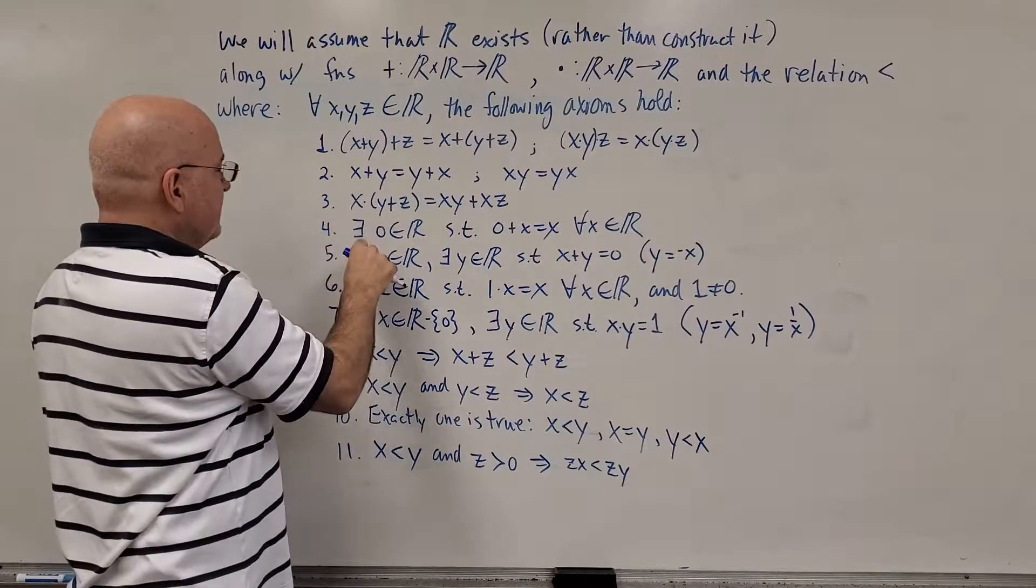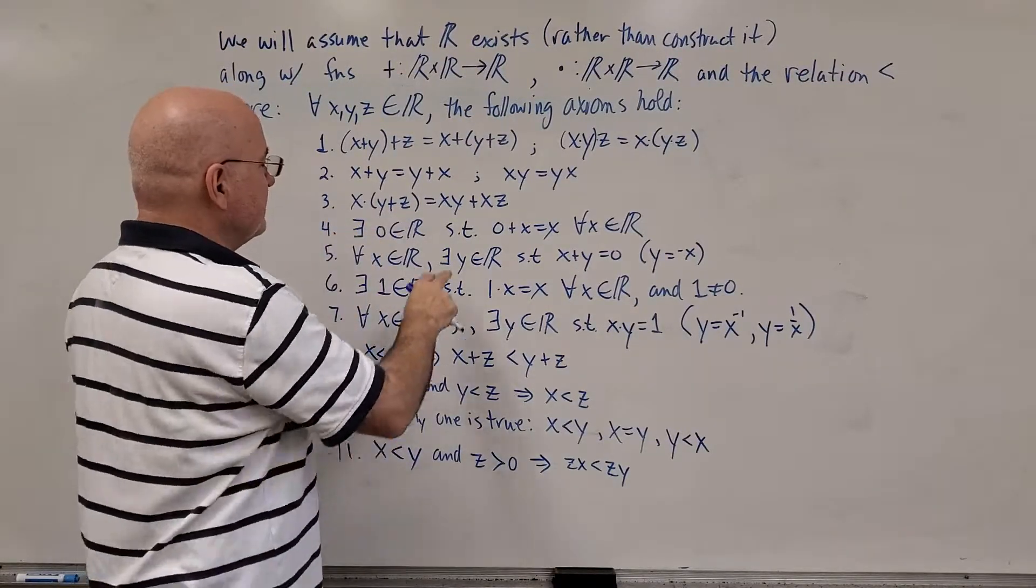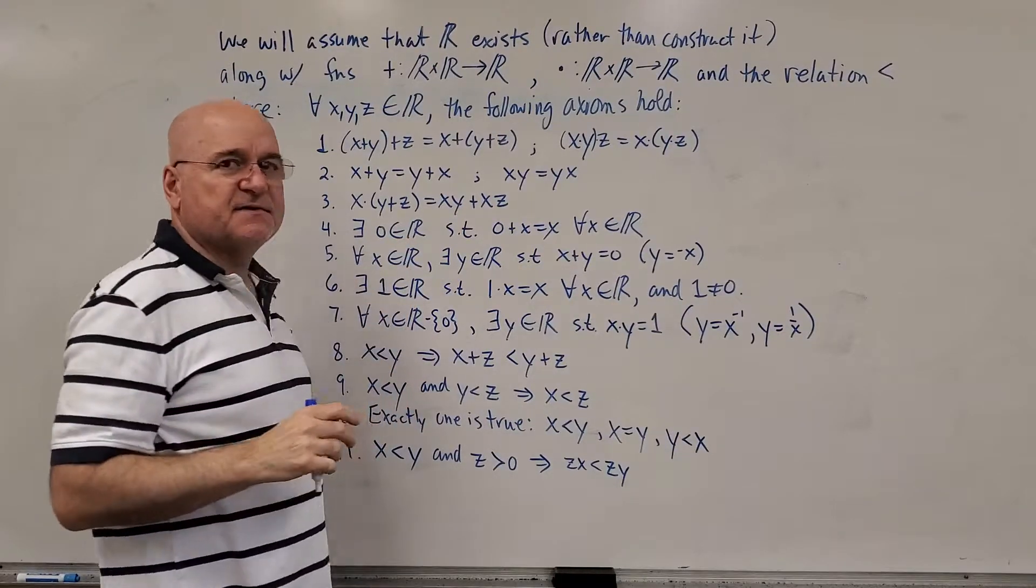Number three, x times the quantity y plus z is xy plus xz. We know that is the distributive property.